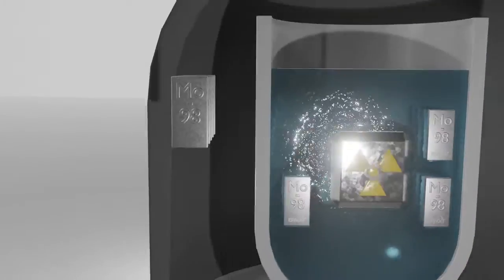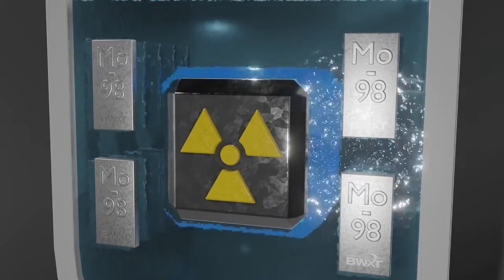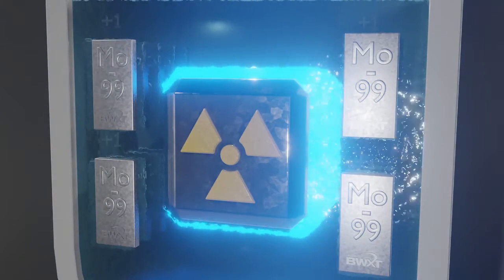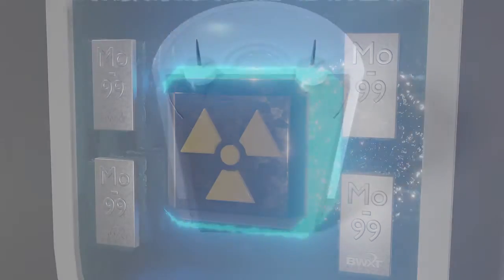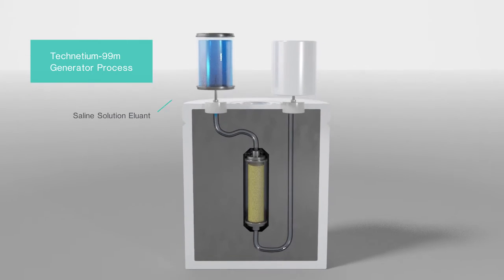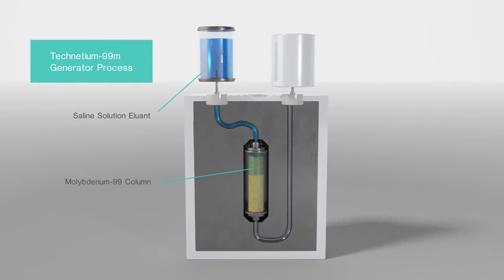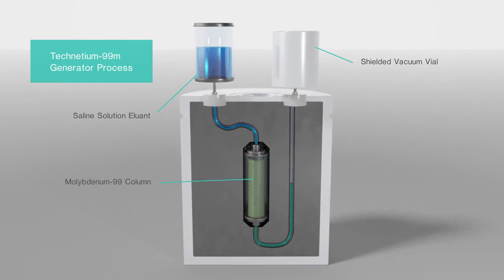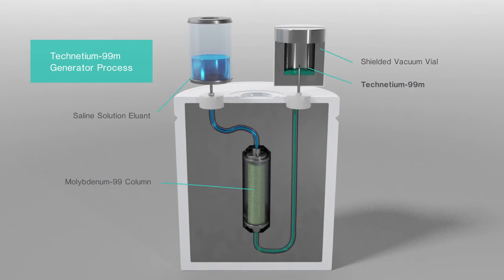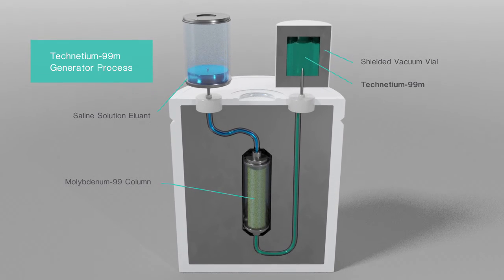Full-scale production includes BWXT-manufactured molybdenum targets that are irradiated in a commercial nuclear reactor. Following irradiation, the moly-99 is processed and loaded into Tech-99-M generators and then transported to hospitals and radio pharmacies across North America.